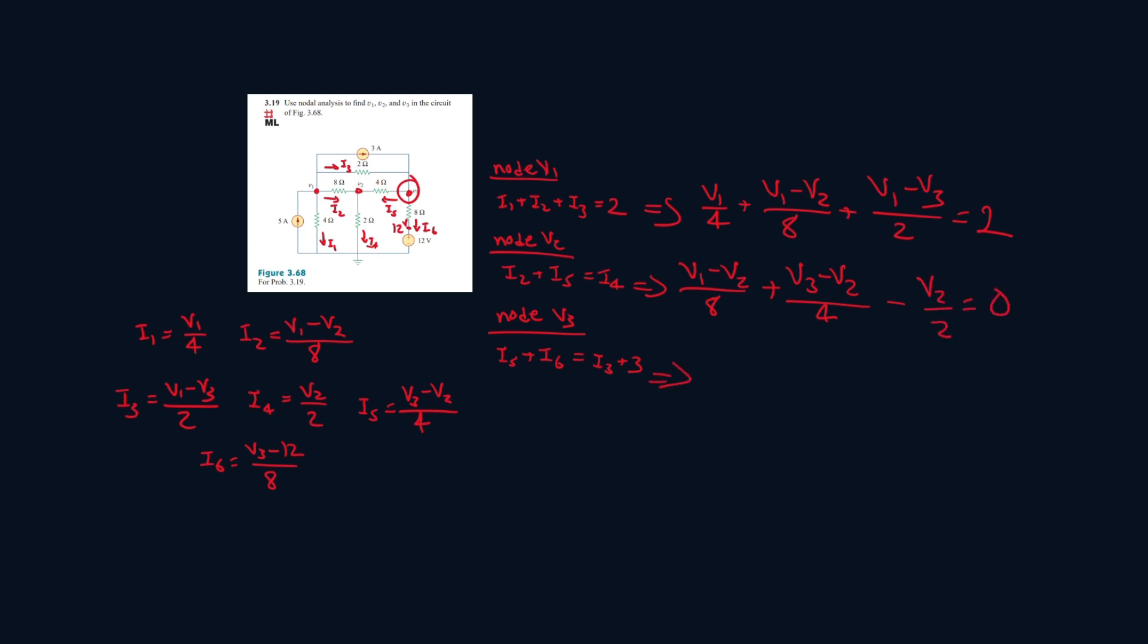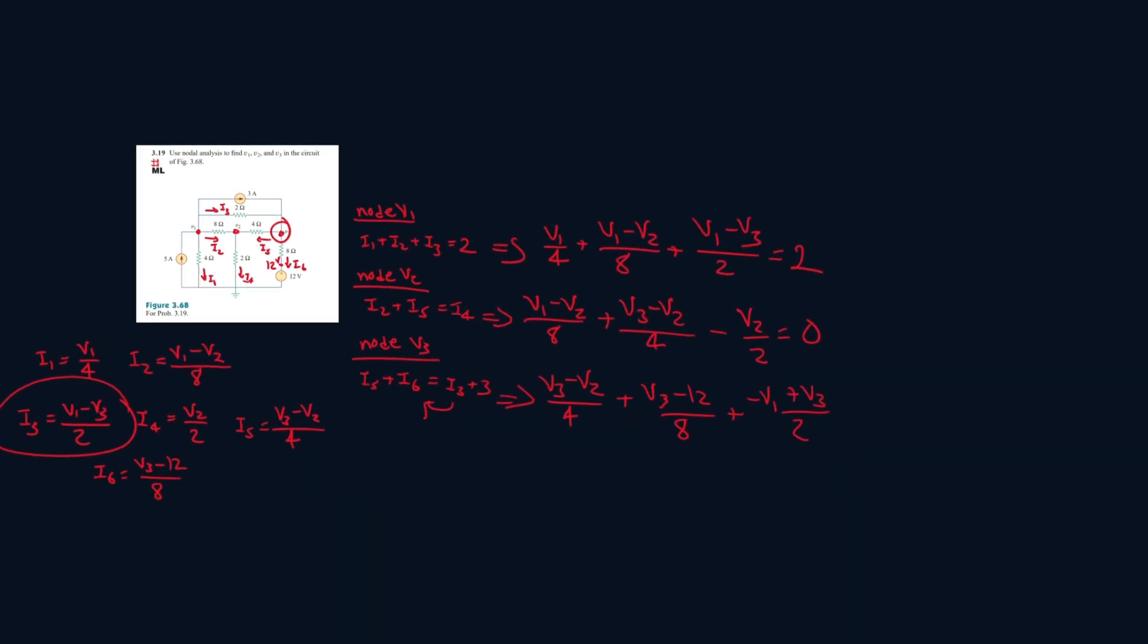Now our last one: I5 is V3 minus V2 all over 4, plus I6 which is V3 minus 12 all over 8. Let's bring the I3 to the other side, so it will be minus I3, which is V1 minus V3 over 2. Let's distribute the negative, so it will be minus V1 plus V3 all over 2, and this is all equal to 3.